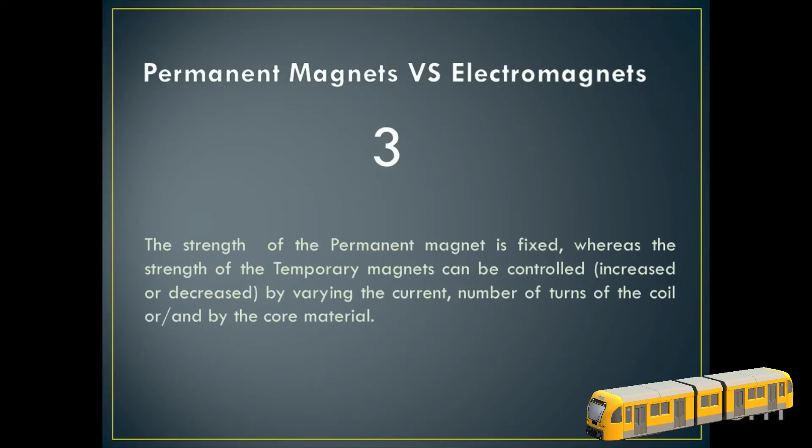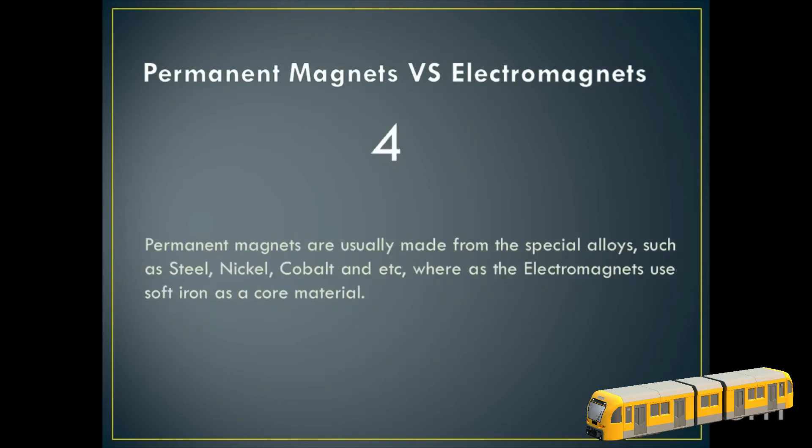The strength of the permanent magnets is fixed, whereas the strength of the temporary magnets can be controlled by varying the electric current through them, by changing the number of turns of the coil, and the core material.